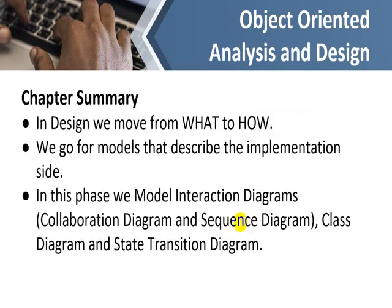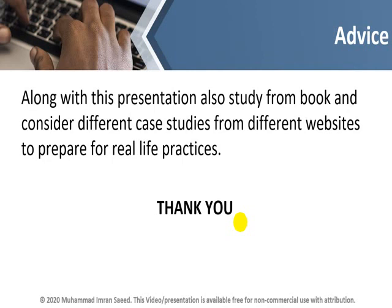In summary, in design we move from what to how — we create models describing the implementation side. In this phase we model interaction diagrams, which are the collaboration diagram and sequence diagram, along with the class diagram and state transition diagram. That's all for this lecture. You will need to draw these basic diagrams for your class project and submit in the next class. Thank you very much.